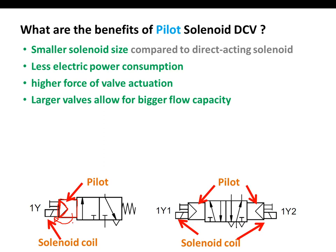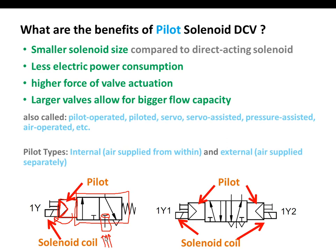With higher actuation forces, we can have bigger valves that allow for larger flow capacity — allowing more pressure to flow at the same time. This pilot could also be called pilot operated, piloted, servo, or servo assisted. It can be either internal — where pressure is taken from inside the valve — or external, where pressure is taken from an external circuit.